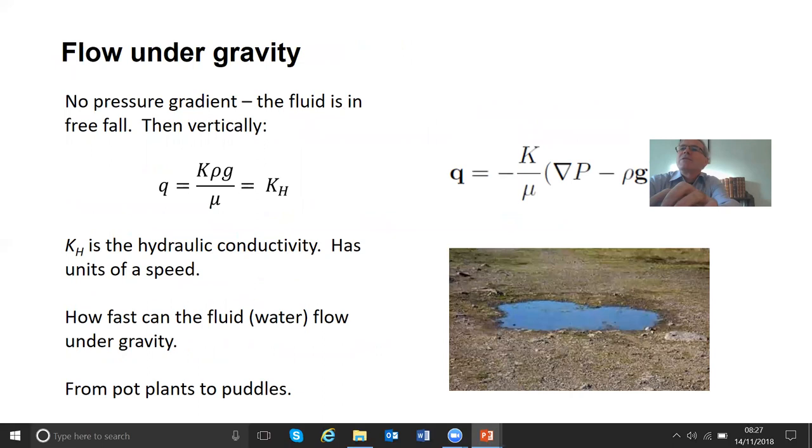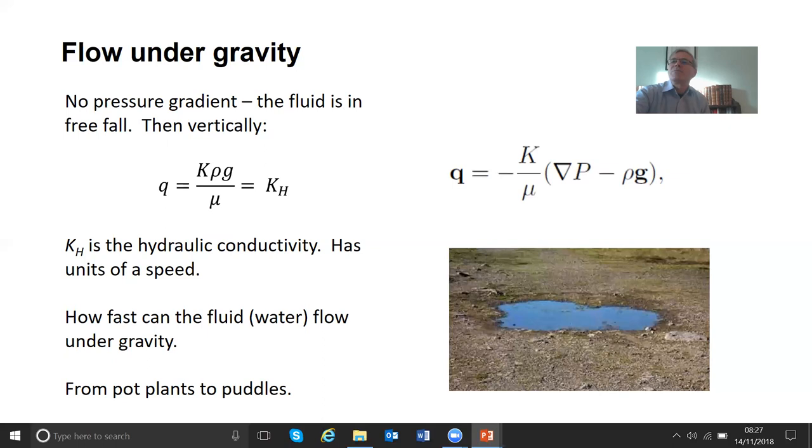The other thing that's useful, just as a simple example, is flow under gravity, and this is certainly very important in hydrology. So imagine that there's no pressure gradient, we're not pumping the fluids, we're not forcing the fluids to move, and the fluids we have are basically in free fall, they're just flowing through a porous medium under gravity. So if they're in free fall, there is no pressure gradient. And we look vertically, and so our equation simplifies as K rho g over mu. And that bunch of terms, the permeability times the density of water times g divided by viscosity of water, is called a hydraulic conductivity in hydrology, and sometimes rather confusingly called a permeability, but it isn't a permeability, it's a conductivity really, and it has the units of a speed. And the question is, then, what that shows is how fast can the water flow?